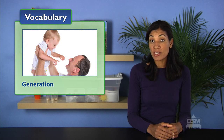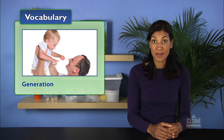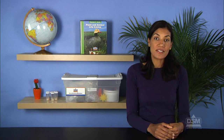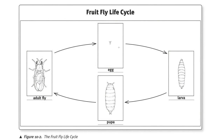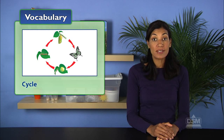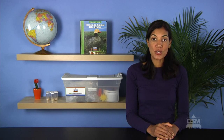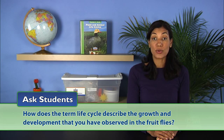Explain to the class that a generation is one complete life cycle of an organism and that after one generation, the life cycle begins all over again to start a new generation. To illustrate the life cycle, draw arrows to connect the boxes on the chart. Inform students that the word cycle comes from a Greek word that means circle or wheel, and that it is used to describe a series of occurrences that repeats. Ask students: how does the term life cycle describe the growth and development that you have observed in the fruit flies?